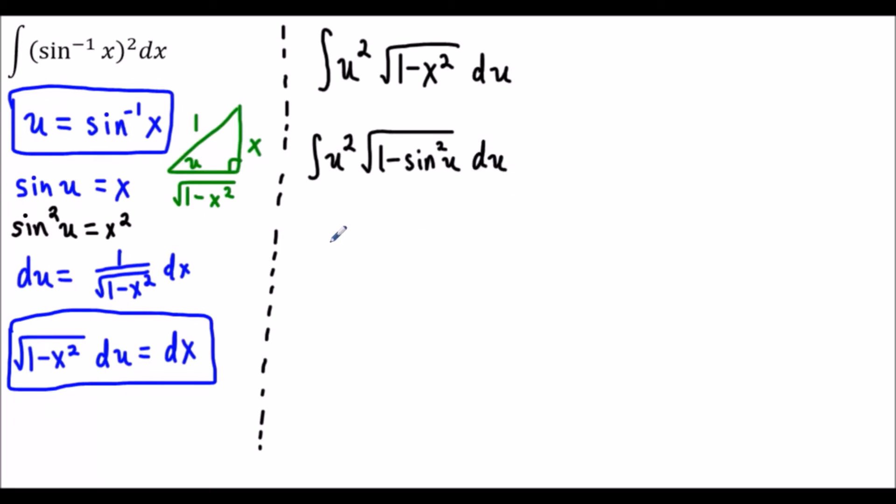For the next stage we're going to use a Pythagorean identity. We'll have u squared times the square root of 1 minus sine squared which simplifies to cosine squared u.